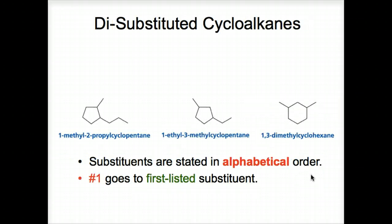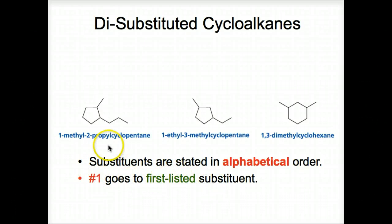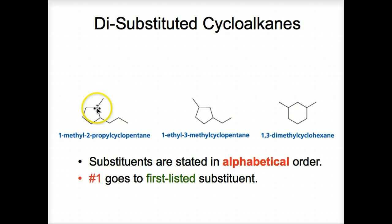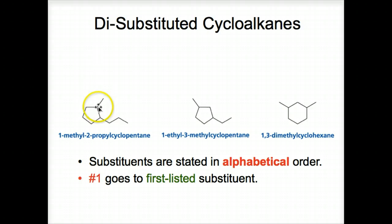Here's a disubstituted cycloalkane. Substituents are stated in alphabetical order, which is no surprise. Number one goes to the first listed substituent — whichever comes first alphabetically, methyl before propyl. We put number one where the methyl group is, then number it so we get the next lowest number on the other substituent. So that's one, that's two — going to the right gives number two. One, two, three — a propyl group. So it's 1-methyl-2-propylcyclopentane.